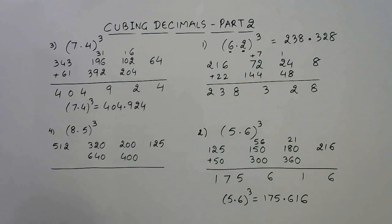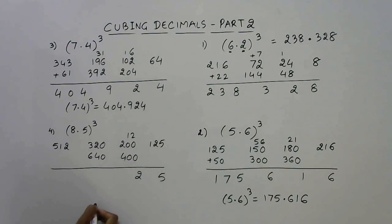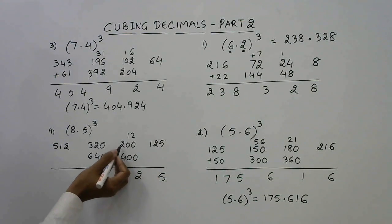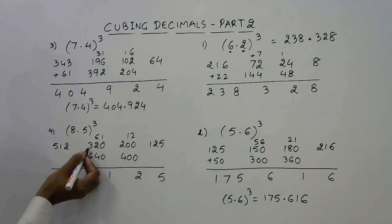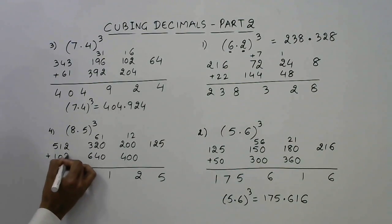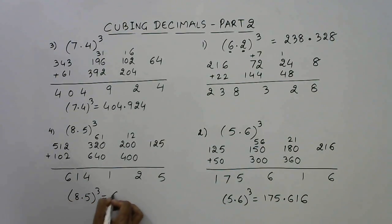And finally we have this one. See 5 will come here, so 12 gets added like this. So 2 will come here, 40, 60, 61, so 61 comes here. Now 1, 64, 96, 102, so 102 gets added here. So this becomes 416. So the answer for 8.5 whole cube is 614.125.